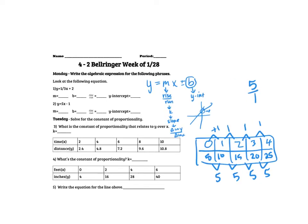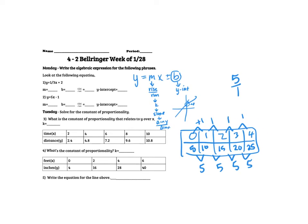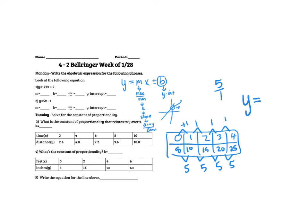That would be our M, and that would be our rise over our run. Now, if I asked you to write an equation for this line, we would say Y equals 5X, and then we would look at our 0. Wherever our X is 0, whatever our Y is there makes our Y-intercept.